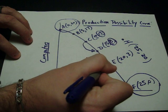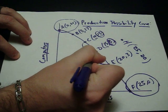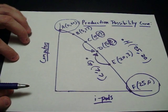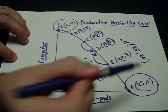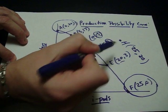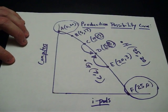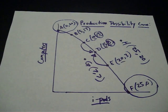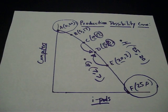What about if we went from E to D instead? What would be the opportunity cost? Well we were producing 20 iPods, now we're only producing 15. So what is the opportunity cost of going from E to D? It would be 5 iPods. That's what we give up going from E to D.